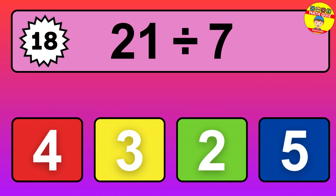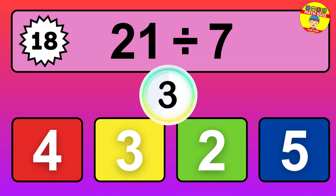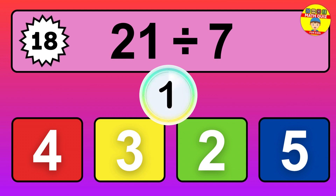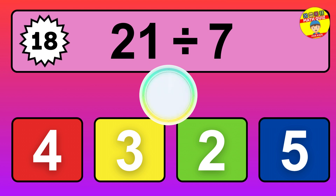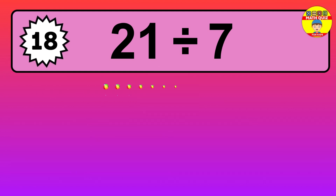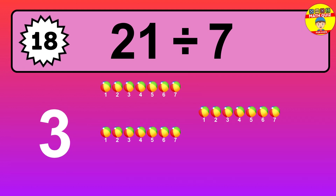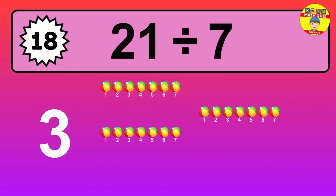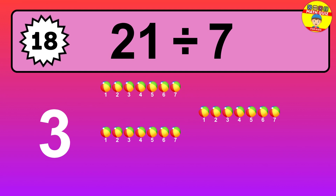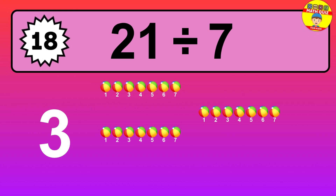21 divided by 7 is... time to think. Let's go to the solution. Divide the number 21 by 7. Each group contains 7 units, so dividing 21 by 7 results in 3 equal groups. Thus,